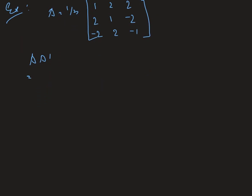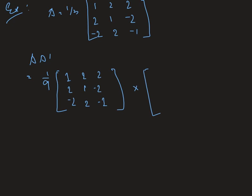So A times A-transpose is going to be one-ninth as the scalar, after multiplying the one-third from A and one-third from A-transpose. We write the two matrices and then multiply them.